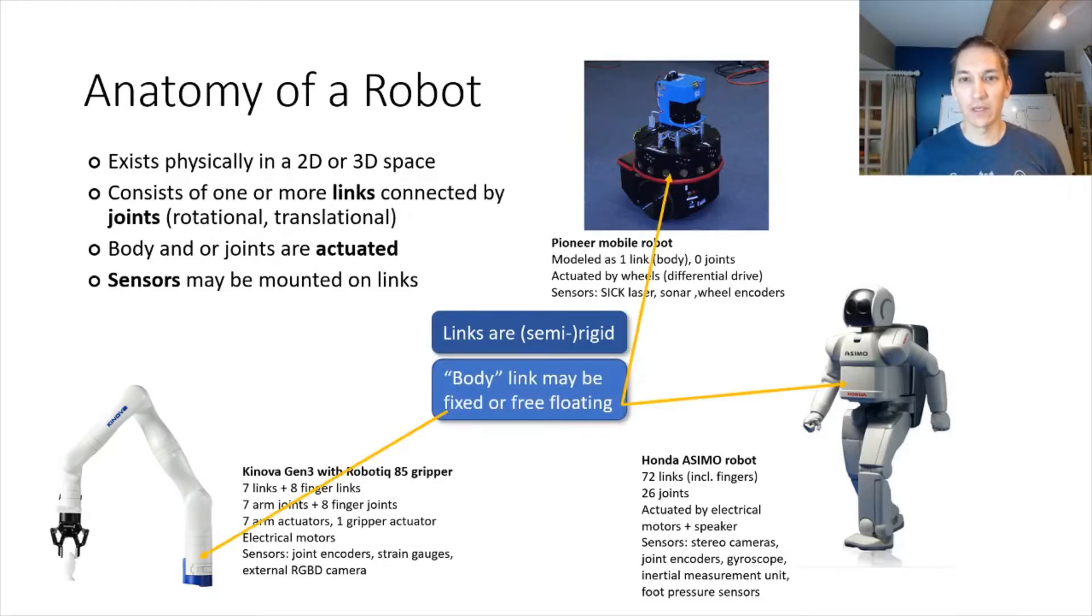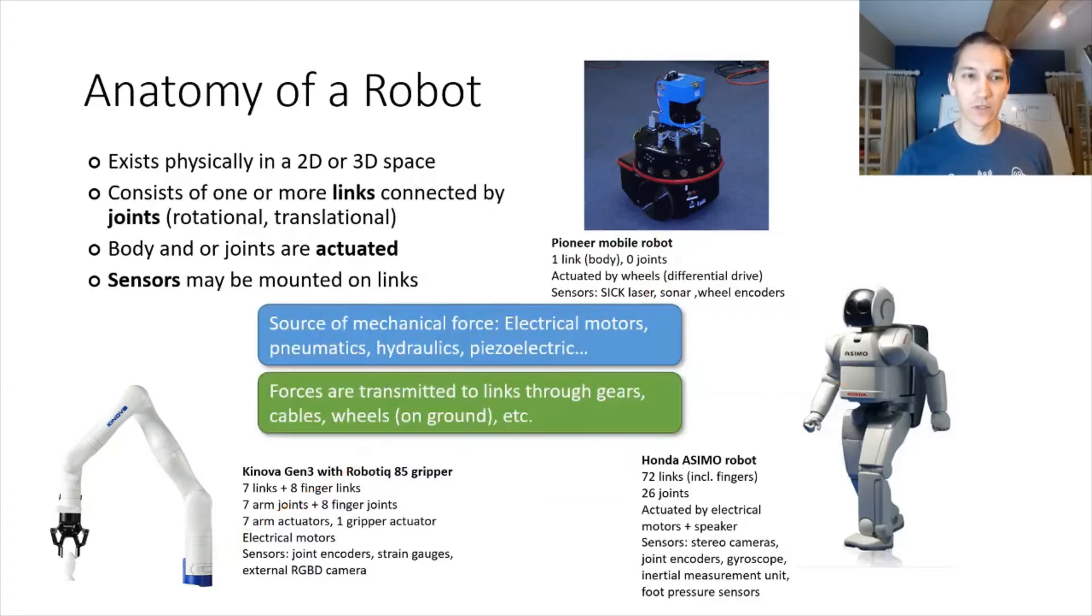There's typically a privileged base link or body link, which is either fixed to the environment or it could also float in the environment, such as in a mobile robot or in a legged robot. We also have some sort of source of movement of these links and joints. These actuation components consist of some sort of generator of mechanical force, usually electric motors, but can also be other types of pneumatics and hydraulics.